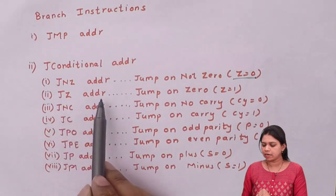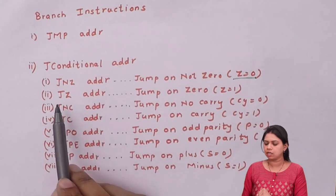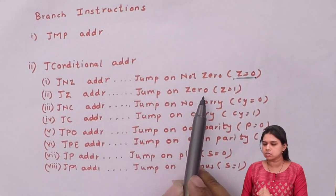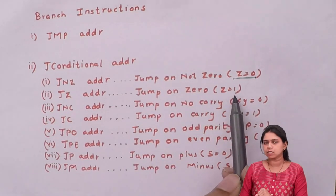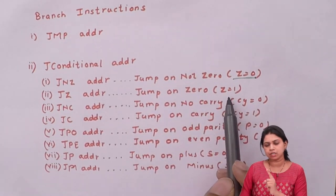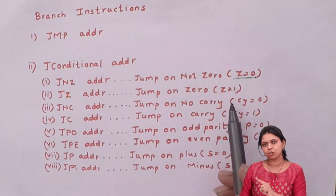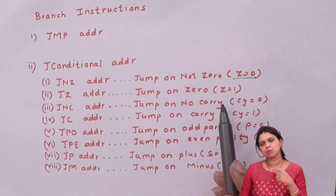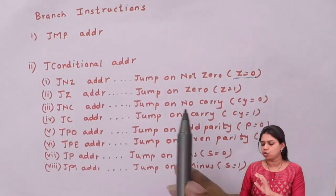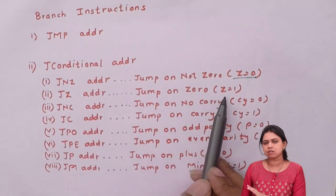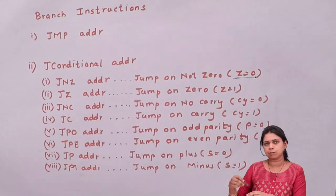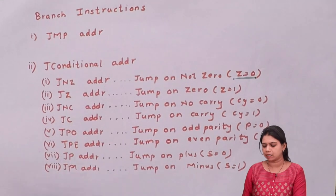Next is JZ address. Here you will jump on zero, meaning when your Z flag is equal to one. Jump on non-zero means your Z is equal to zero. So when your Z is equal to one, then you will jump onto some address.